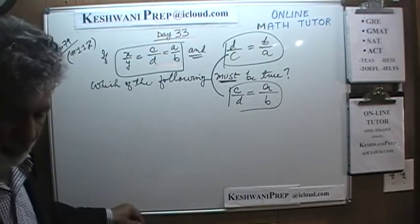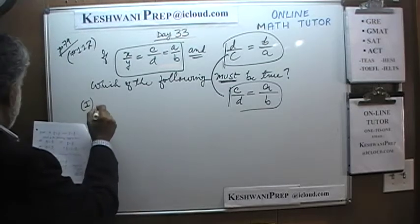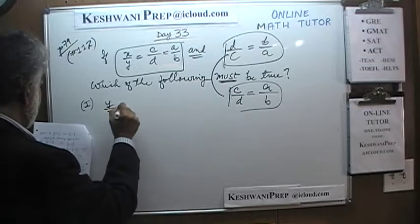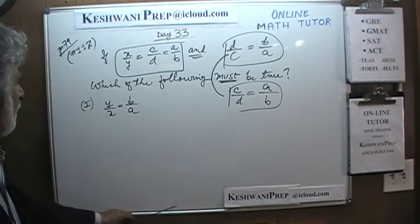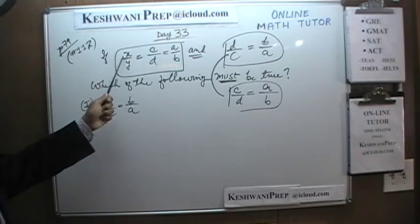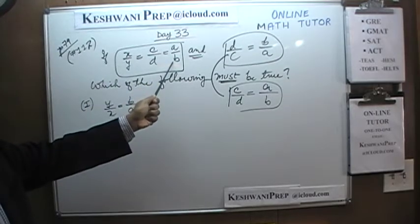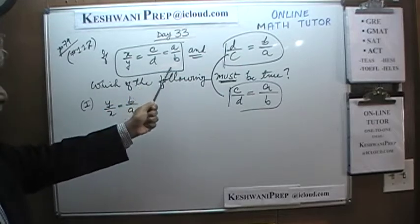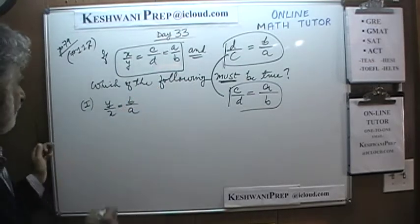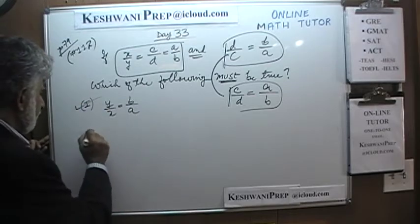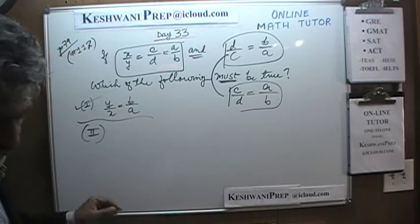Statement 1 says y/x = b/a. Since x/y = a/b, taking the reciprocal gives y/x = b/a. That works perfectly — statement 1 is true.